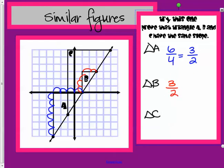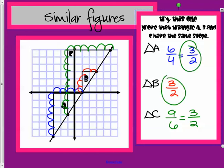Let's look at triangle C. It went up nine and to the right six. So, nine over six simplifies to three halves. All of these have the same simplified ratio.